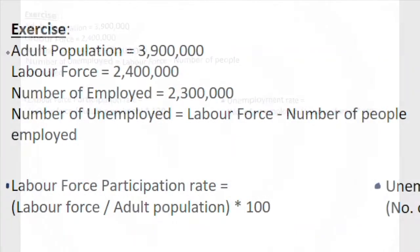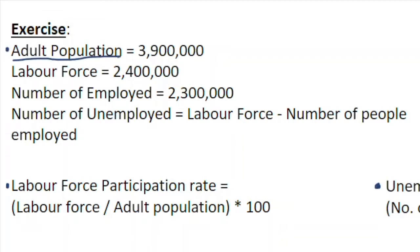What we have here is information for the adult population, which is 3.9 million people in our economy. We also have the labor force, which is 2.4 million people, and the number of people employed, which is 2.3 million.